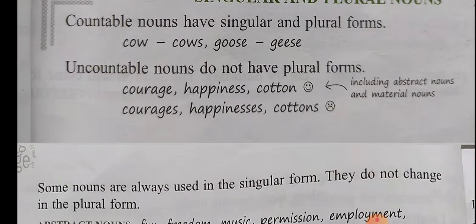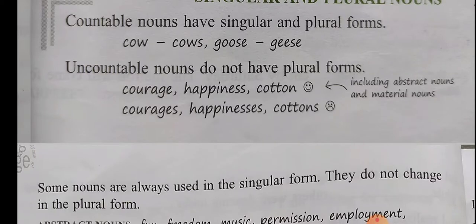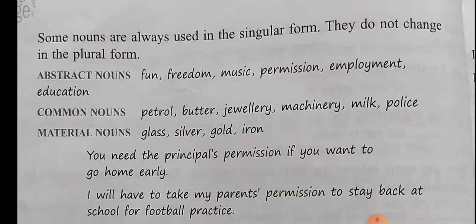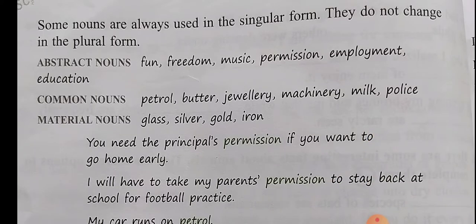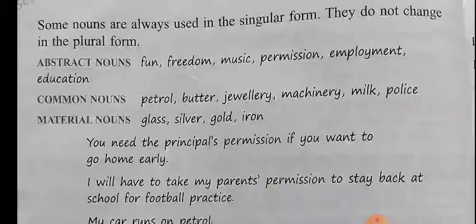Uncountable nouns do not have plural form. Courage, happiness, cotton — we cannot say courages, happinesses and cottons. Some nouns are always used in singular form; they do not change to plural form. The rule is: abstract nouns, common nouns and material nouns cannot change to plural form.